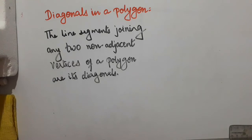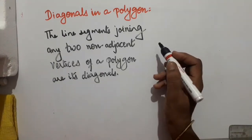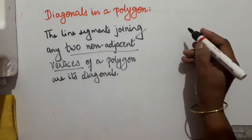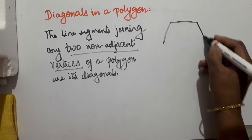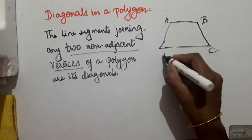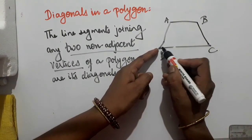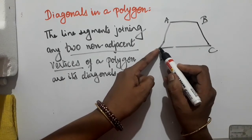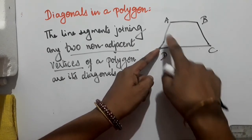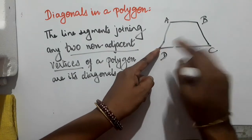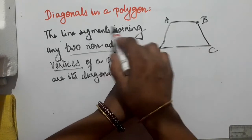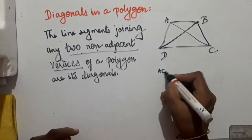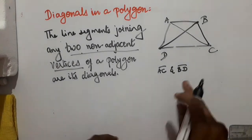Now let's see the very important concept of a diagonal in a polygon. The line segments joining any two non-adjacent vertices of a polygon are its diagonals. For a quadrilateral ABCD, DC and DA are adjacent to vertex D, so C and A are adjacent vertices. The non-adjacent vertex to D is B, so line segment DB is a diagonal. Similarly, AC is also a diagonal. So AC and BD are the diagonals in a quadrilateral.